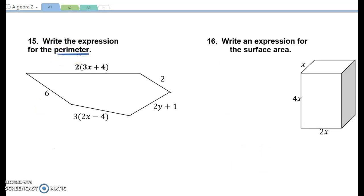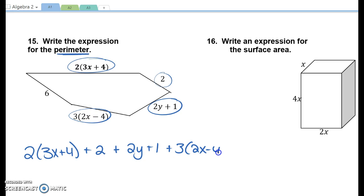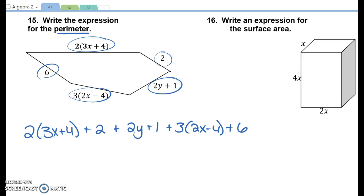Perimeter, you add all of the sides together. So we would add 2 times 3x plus 4 plus the 2 plus the 2y plus 1 plus the 3 times the quantity 2x minus 4 plus the 6. That's a long problem. What do you think we would need to do? Combine like terms. How do we get rid of those parentheses first? Distribute. So we would distribute and we would combine like terms.